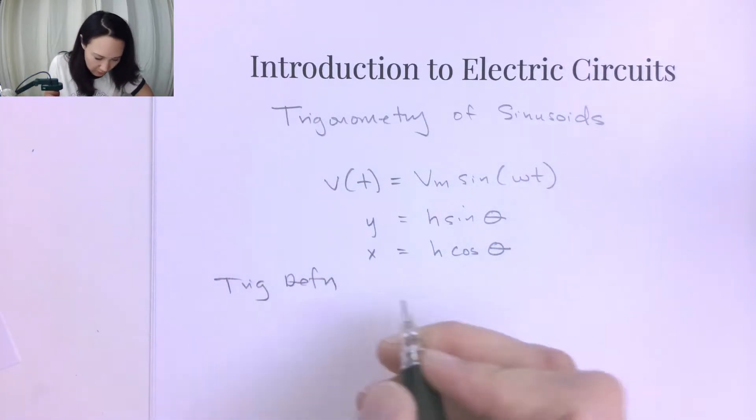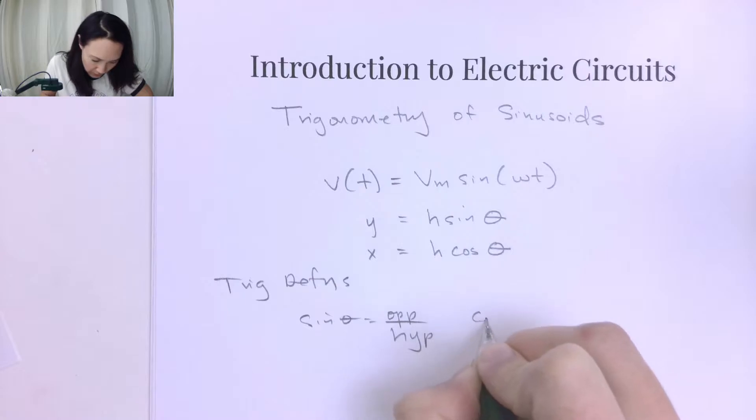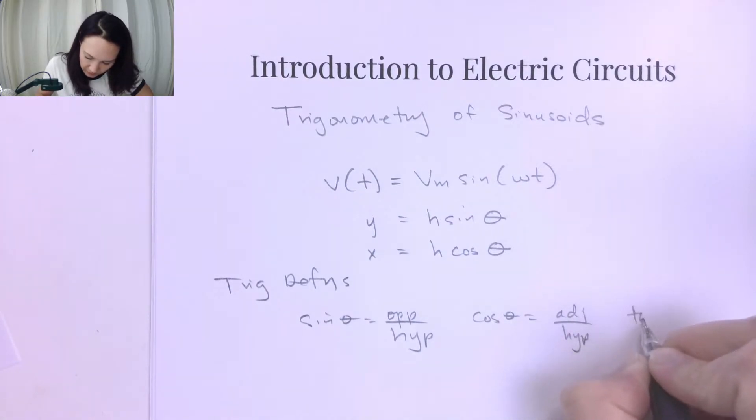If you recall, sine of theta is opposite over hypotenuse of a triangle, cosine of theta is adjacent over hypotenuse, and tan theta is opposite over adjacent.